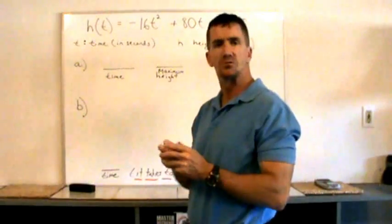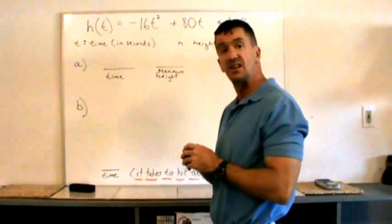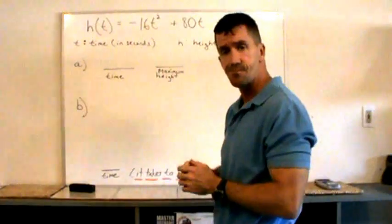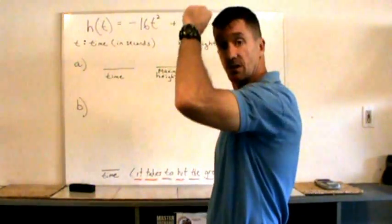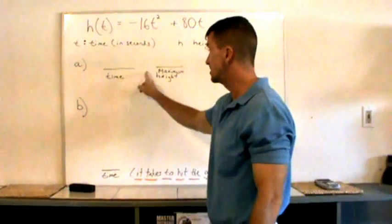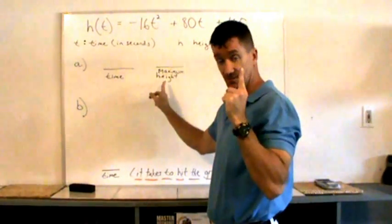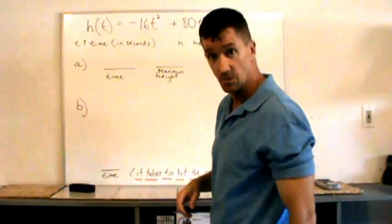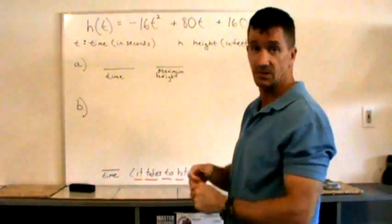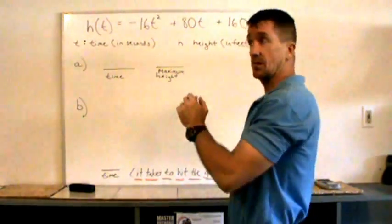In this problem, a ball is being thrown from 160 feet in the air. It's being thrown upward. Just being thrown upward and that ball is going to go and hit the ground. We're going to determine the time it takes to reach the maximum height. That's the first thing we'll do. And then secondly, we'll determine how long does it take for that ball to hit the ground once it left their hand.